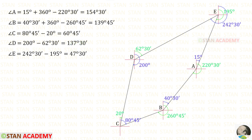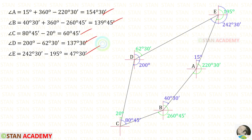In the similar way, we can get the interior angle at station E by subtracting this angle from this angle. So, for the interior angle at station E, we will get 47 degrees 30 minutes. We have found all of the interior angles.